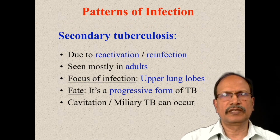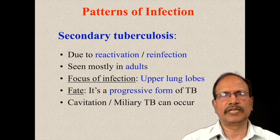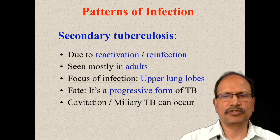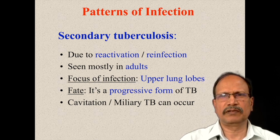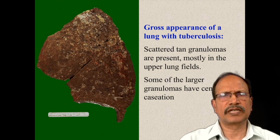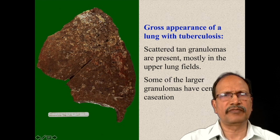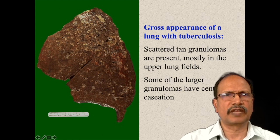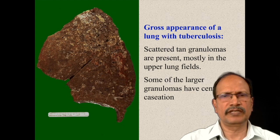Secondary tuberculosis is known as reactivation tuberculosis or reinfection tuberculosis, meaning the person was already exposed to tuberculous bacilli, got sensitized, and reacts differently on second exposure. It is most commonly seen in adults, with the focus of infection in the upper lung lobes. Its fate is the progressive form of tuberculosis with cavitation, and sometimes it may be associated with miliary spread. This slide shows the cut surface of the lung in secondary tuberculosis, with all the gray-white areas representing granulomas and a larger area showing caseous necrosis, mostly confined to the upper portions of the lung.